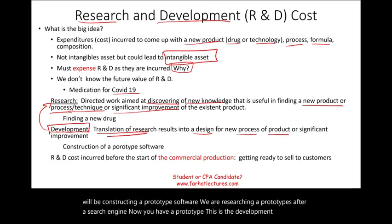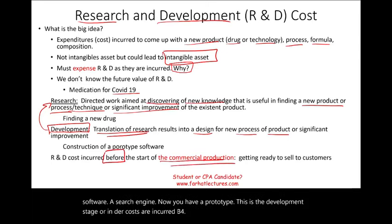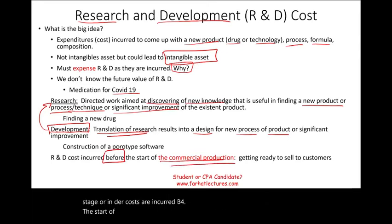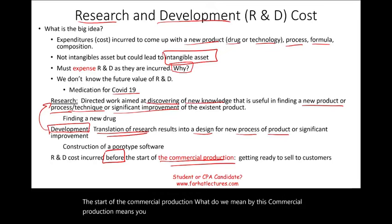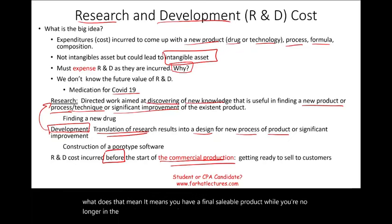R&D costs are incurred before the start of commercial production. Commercial production means you are ready to sell the product to customers — meaning you have a final saleable product. At that point, you are no longer in the R&D phase.